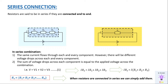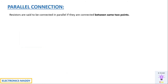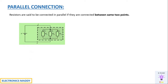Next, let's go into parallel connection. If resistances are connected in parallel, that means they are connected between the same two points. In the figure, you see a supply voltage V and three resistors connected across the same two points A and B. Since all these resistors are connected between the same two points, they are said to be in parallel.